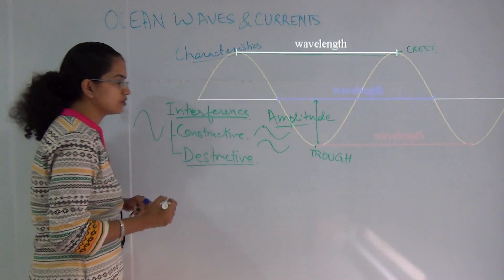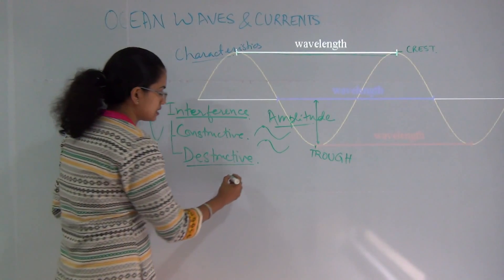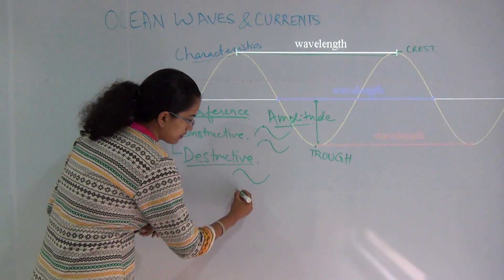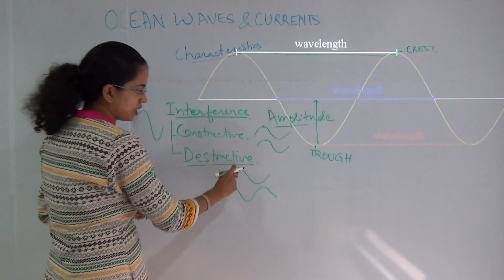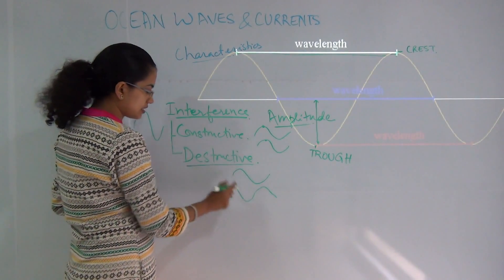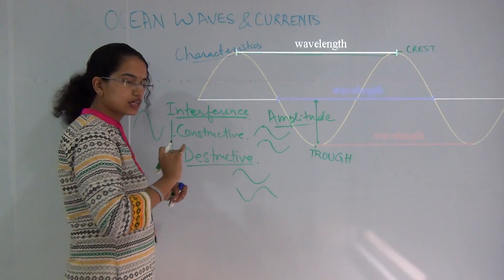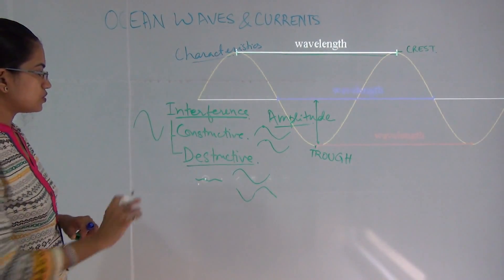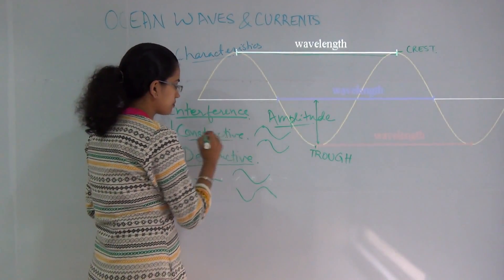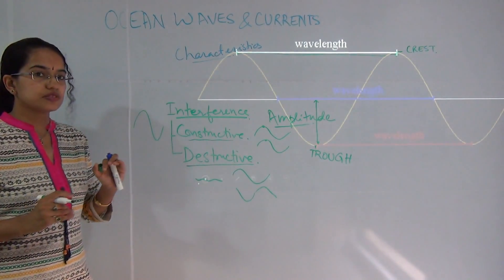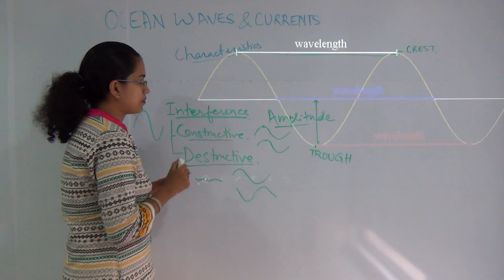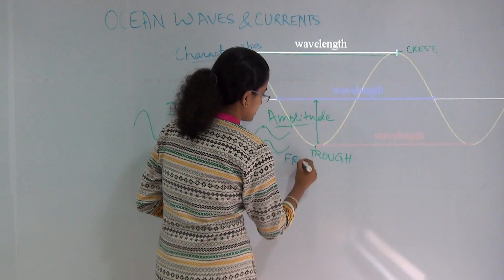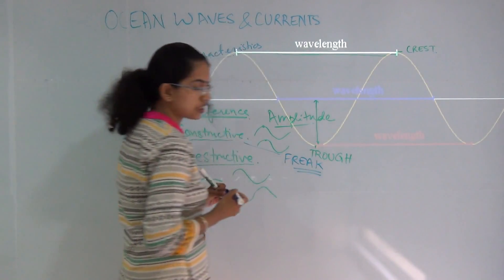In destructive interference, you have one wave with the crest here and another wave with the trough here. The crest and the trough cancel out and you have a single wave that runs through. This is how we understand wave formations. Constructive waves can be called freak waves in ocean studies.